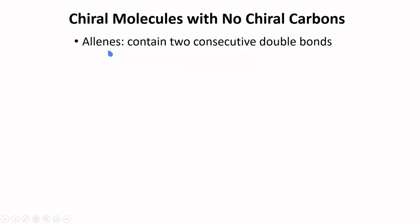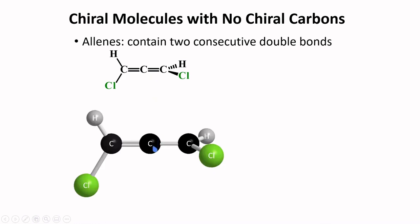Molecules do not need to have chirality centers to be considered chiral, as long as they lack a symmetry plane. Allenes can be such type of molecules. They contain two consecutive double bonds. They are cumulative dienes. Take this molecule for example. This can be represented by this model. This compound does not have a symmetry plane and so can be considered chiral. This compound can also be designated using the R and S naming convention.